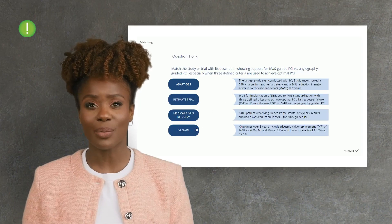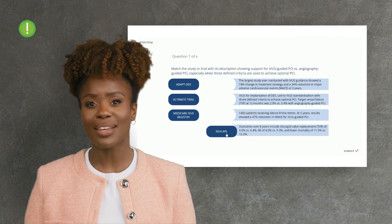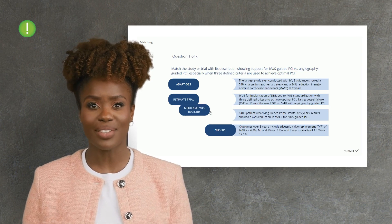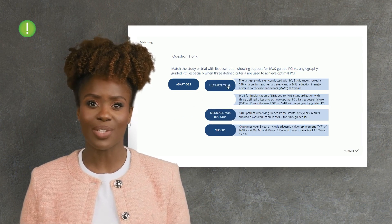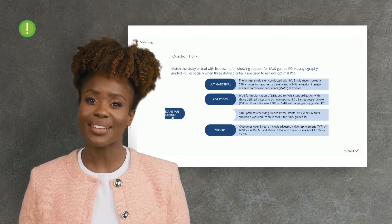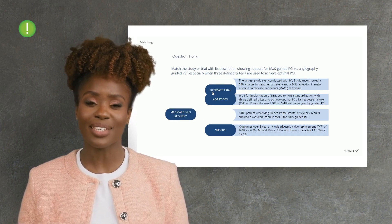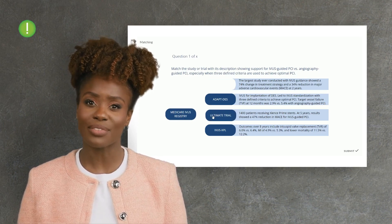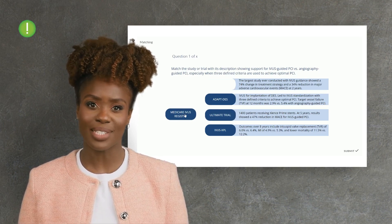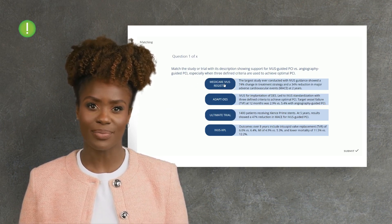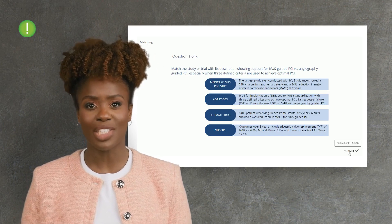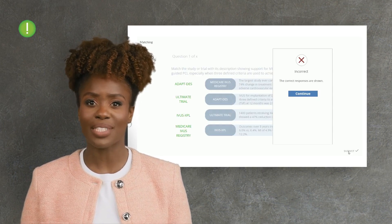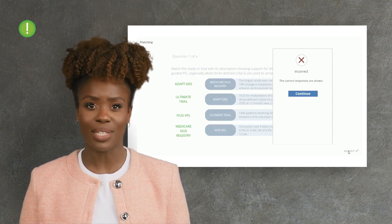For example, you might add a matching activity to your online learning module so your learners can see how they're doing. Here the learners match the name of a scientific study with its description. Learners click Submit to check their work and receive immediate feedback.